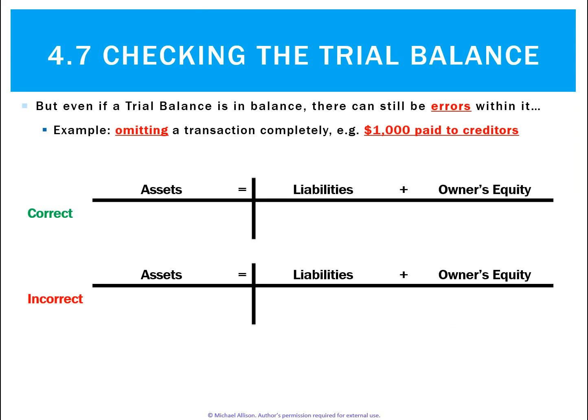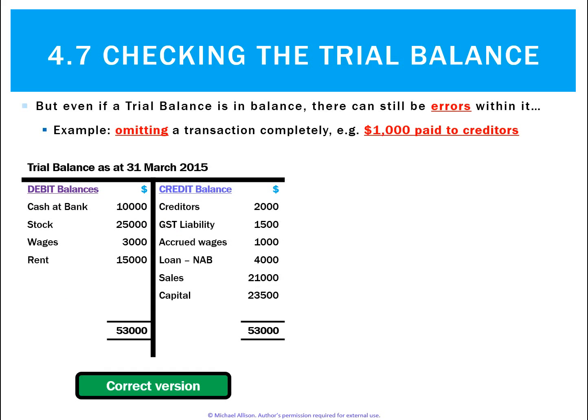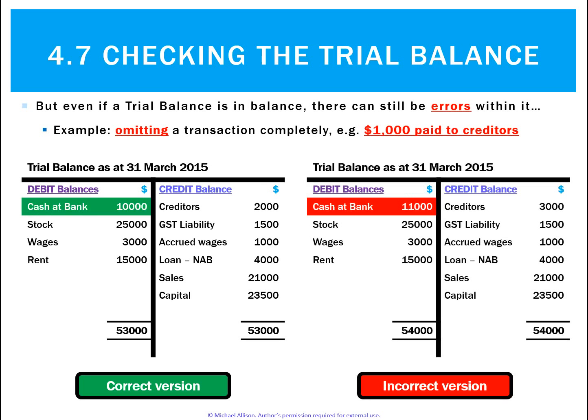Another error can be if you simply omit or forget a transaction. In this instance, you were meant to record $1,000 paid to creditors — so cash would have gone down $1,000 and so would creditors — but in the incorrect version you simply didn't record anything; you left it blank. So what would that look like? We've got the trial balance on the left. Cash should be $10,000, but in your incorrect trial balance you've got $11,000.